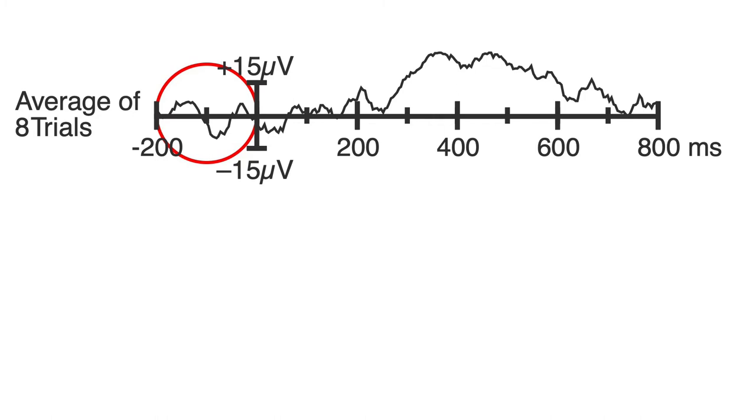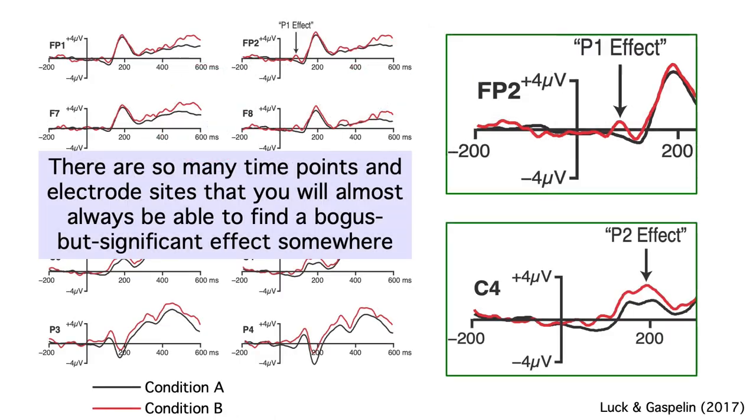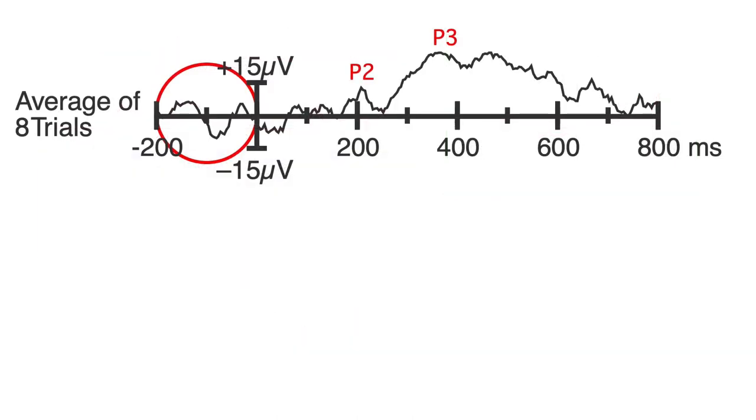That residual noise is a lot smaller than the P3 here, but it's about the same size as this P2. If the experimental effects in a study aren't much bigger than the baseline noise, you should be skeptical of the effects, even if they're statistically significant. Remember, there are so many data points and electrode sites in an ERP study that you can almost always find a significant but bogus effect somewhere. So when you see an effect like this P2, you should be skeptical, even if it's statistically significant.